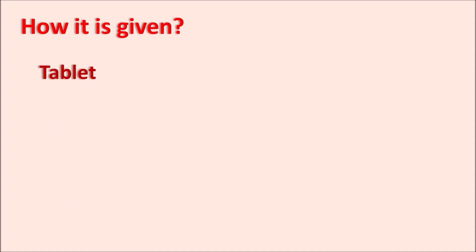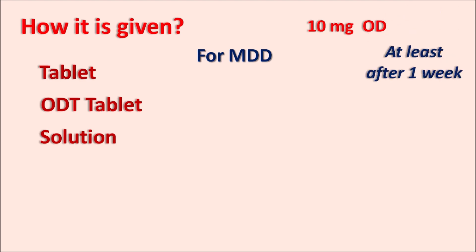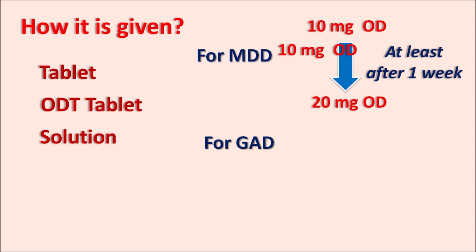This drug is available as a film-coated tablet, an orally disintegrating tablet, and also as a solution. The dose for major depressive disorder is initiated at 10 mg once daily. The dose can be increased based on symptoms but increments should be done at least after one week of treatment. The dose can be increased up to 20 mg once daily, but in adolescents under 18 years, the increment should be slow — only after three weeks of treatment. For generalized anxiety disorder, the dose is similarly initiated at 10 mg once daily and can be increased up to 20 mg once daily after one week.